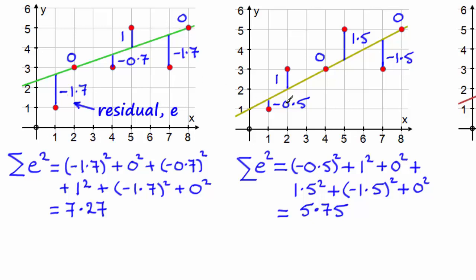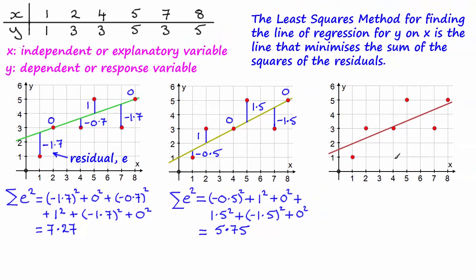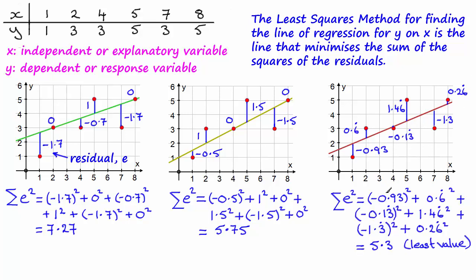But is there still a better line, a line where we can reduce this value? Well if you turn to this line here, in fact this is the line of best fit. If you were to look at all the residuals as you see here and square them, you end up with 5.3 and it turns out this is the least value. I'm not going into how that's arrived at but just take my word for it that is the least value.